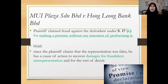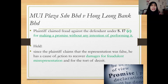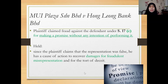If you recall the topic of misrepresentation, we discussed three types: wholly innocent, negligent, and fraudulent. Damages is only allowed for cases involving fraudulent misrepresentation. That's why the court said yes, this is a case of fraudulent misrepresentation, so you can claim damages — either under law of contract or under the tort of deceit, since both are civil actions. The second case is important because it explains the application of Section 17, clause C.